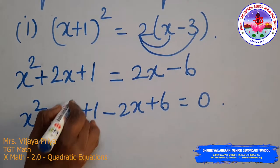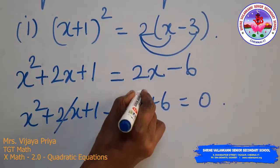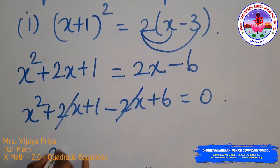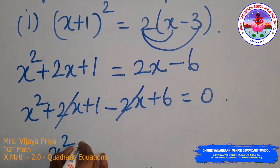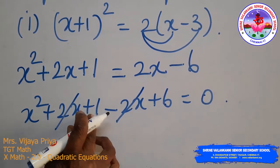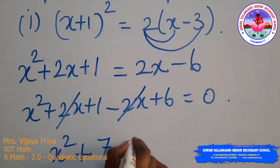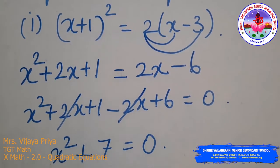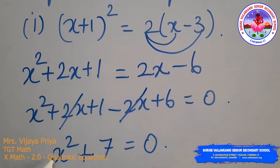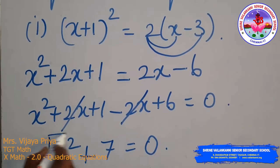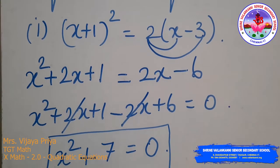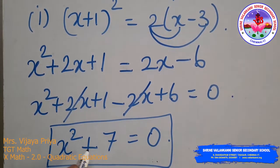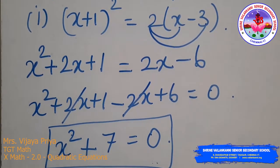Simplifying: +2x and −2x cancel out, leaving x² + 7 = 0. Since this equation has the variable with power 2, it is a quadratic equation.